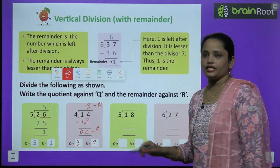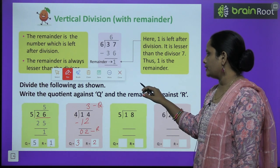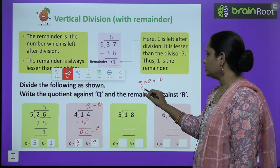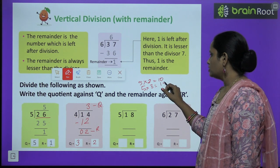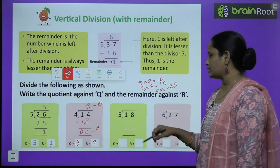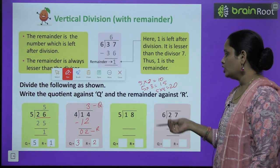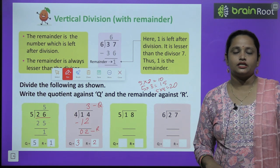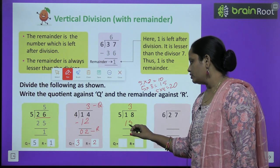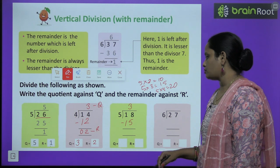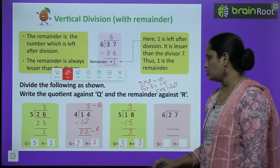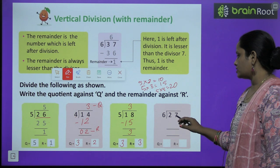Next: divide 18 by 5. So we read the table of 5: 5 twos are 10, 5 threes are 15, 5 fours are 20. When I read the table of 5, I found that 18 doesn't appear in the table of 5. So which number smaller than 18 appears? Is it 20 or 15? So 15 is smaller — 3 times. So we wrote 5 threes are 15, subtracted both. When we subtracted 5 from 8, we get 3. So the quotient is 3 and the remainder is also 3.